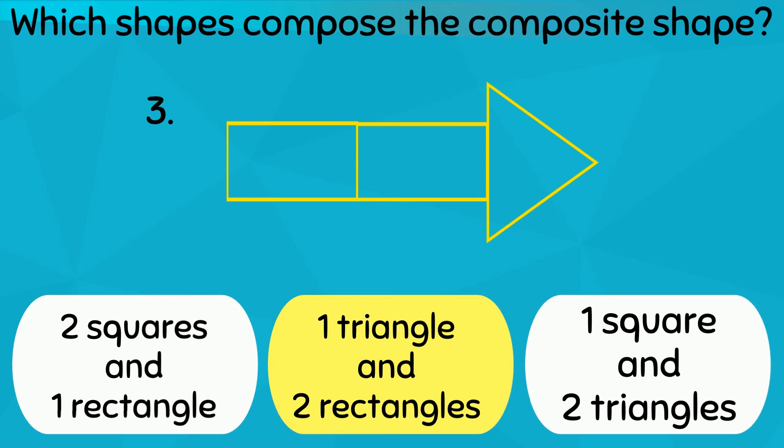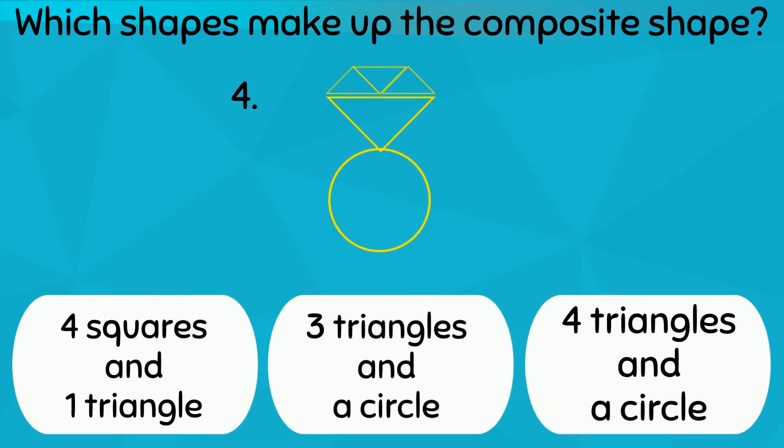Lastly, can you guess the answer to this shape? That's right! This shape is made up of four triangles and a circle.